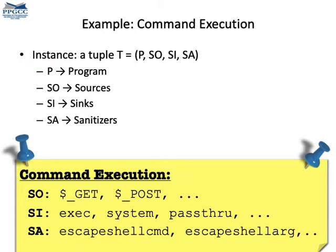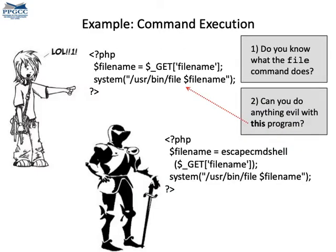There is a kind of attack called command execution in which an adversary forces the execution of some command of the operating system in the environment of the target program. The program on the top is vulnerable. Can you stop the video and try to find a way to run, say, the command remove star — remove everything — by manipulating the contents of the GET array? The program on the bottom is a safer version of the vulnerable program.